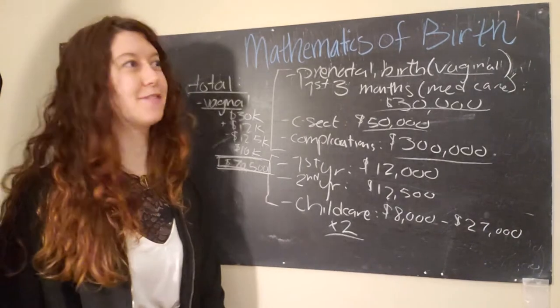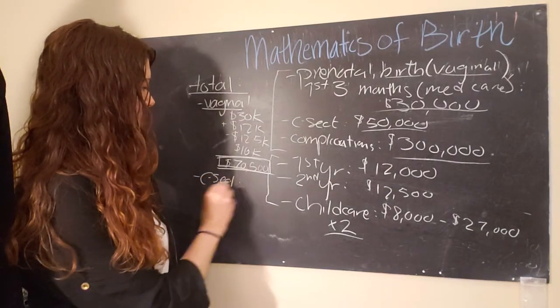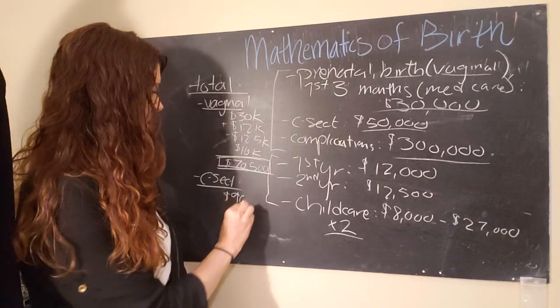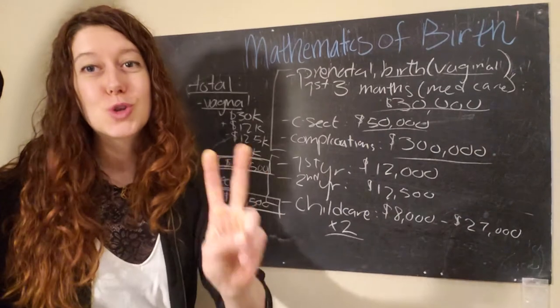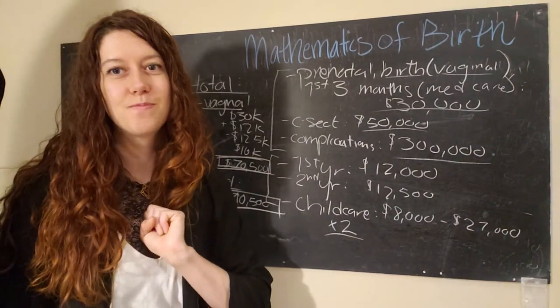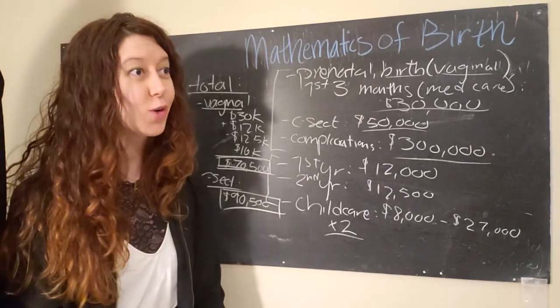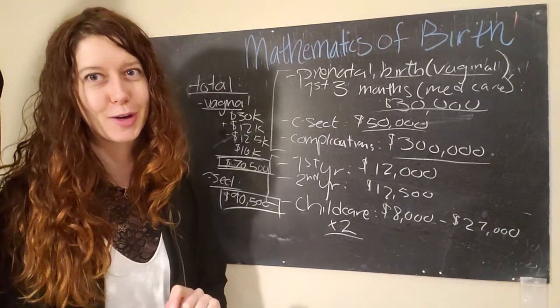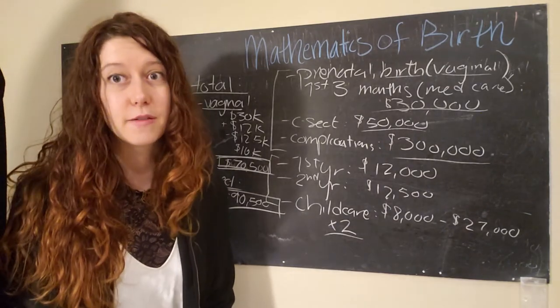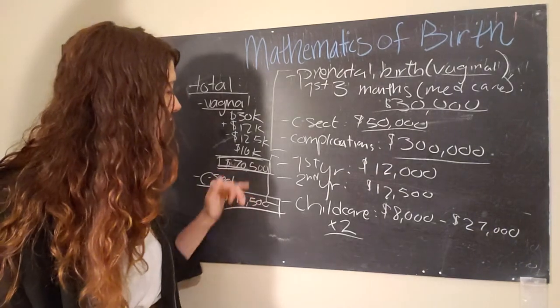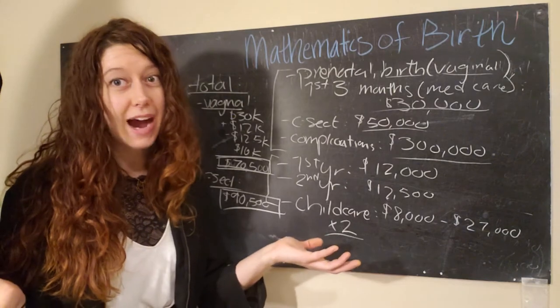So again, first two years of a child's life cost about $70,500. Whew. I definitely do not make that much. If you have a C-section that increases by about 20,000, so you're looking at $90,500 for the first two years of a child's life. Wow. Yeah.